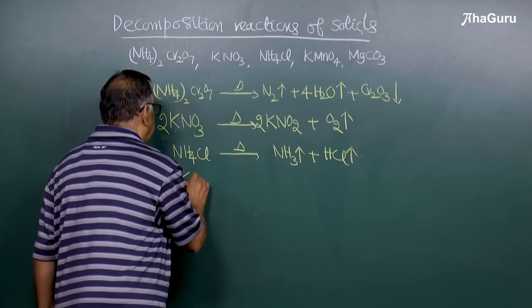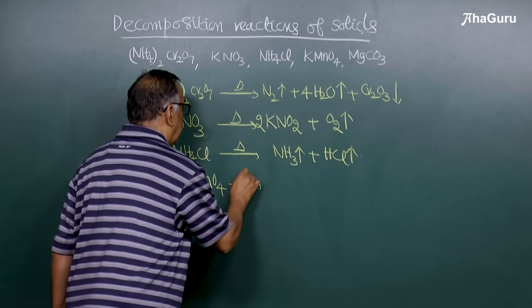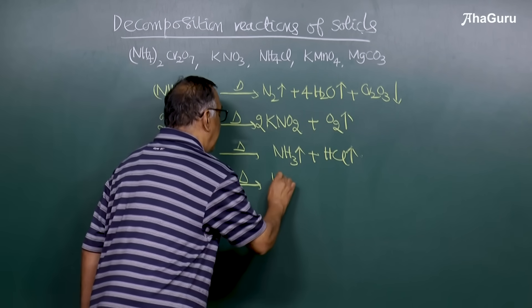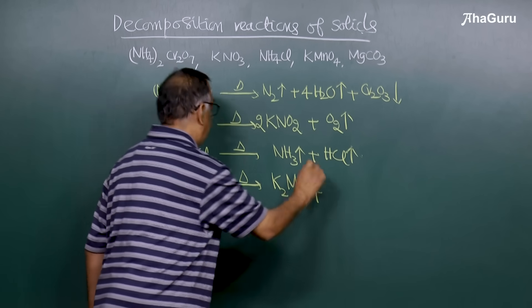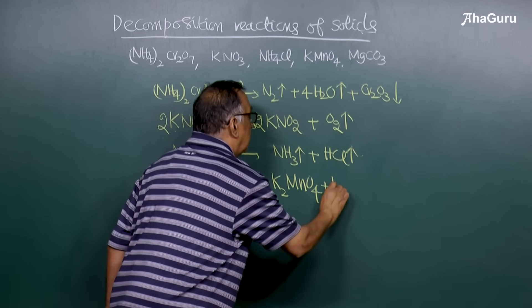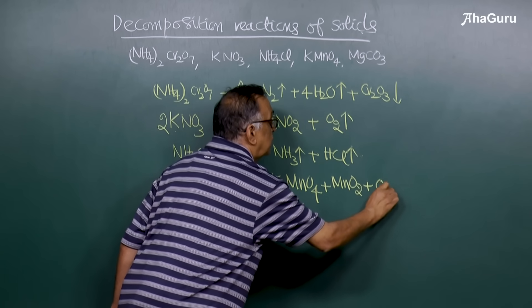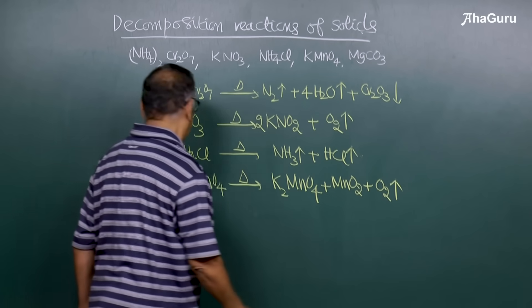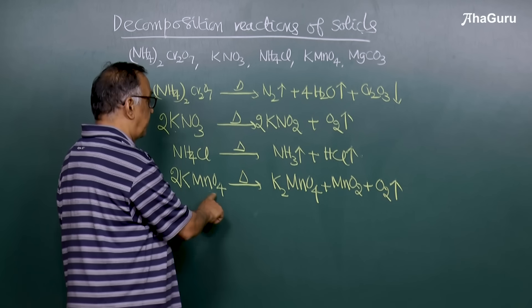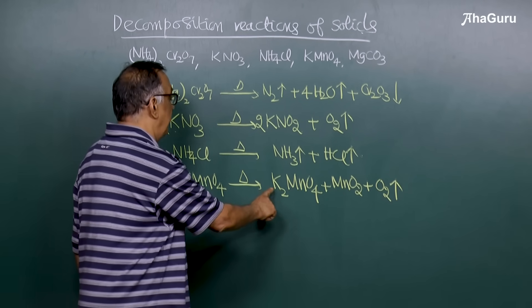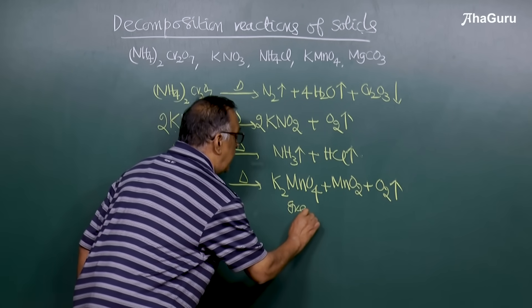If I take potassium permanganate, on decomposition it forms potassium manganate plus MnO2, both are solids, plus oxygen gas. The balanced equation is 2 moles of KMnO4 on heating forms K2MnO4, potassium manganate, which is a green solid.